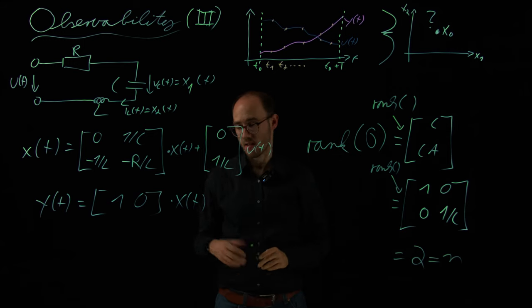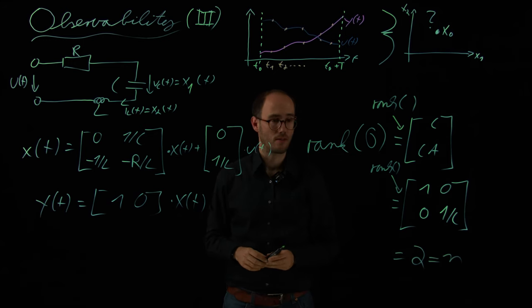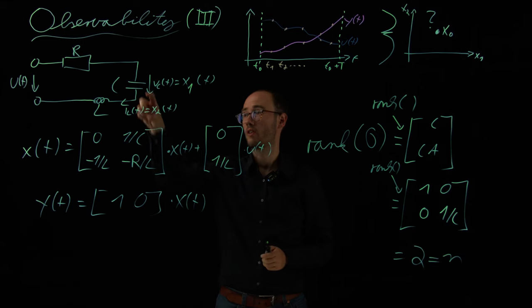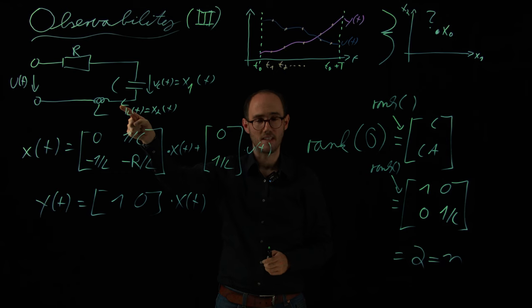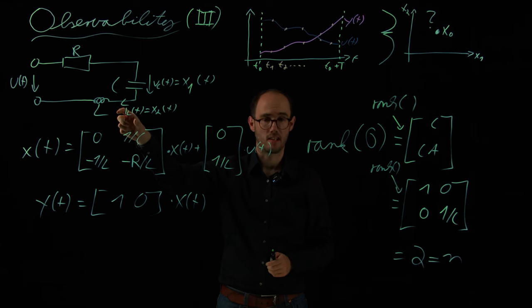And therefore we can show that this LC circuit is fully observable. So that means, although we just measure only the voltage at that capacitor, we are also able to estimate, using estimator techniques, which we will discuss later during the lecture course, to estimate this inductor current.